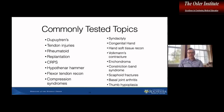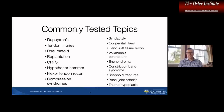Moving on — these are the most commonly tested topics, at least on the plastic surgery in-service, which is a good correlation to the boards. You'll pretty reliably get a question on these topics: Dupuytren's, tendon injuries, rheumatoid arthritis, replantation or hand trauma, CRPS, hypothenar hammer, flexor tendon reconstruction, compression syndromes (carpal tunnel, cubital tunnel), congenital hand issues especially syndactyly, soft tissue reconstruction (much of it fingertip), Volkmann's contracture, enchondromas, constriction band syndrome, scaphoid fractures, basal joint arthritis, and thumb hypoplasia.